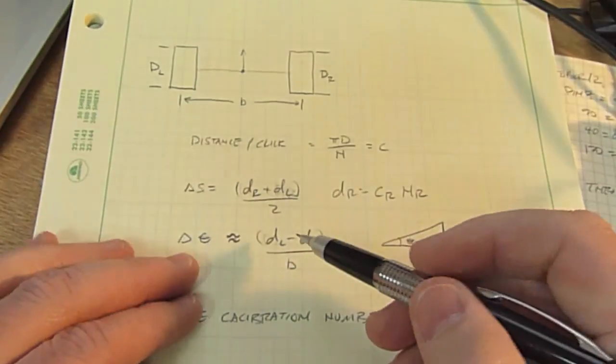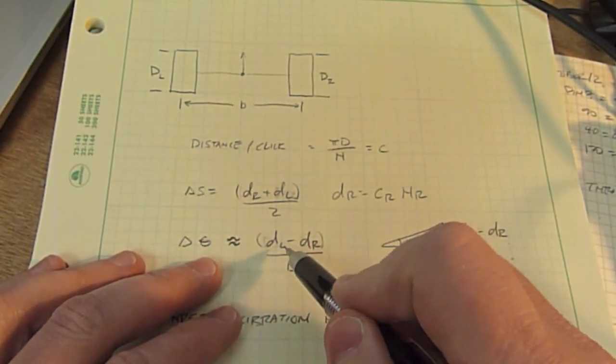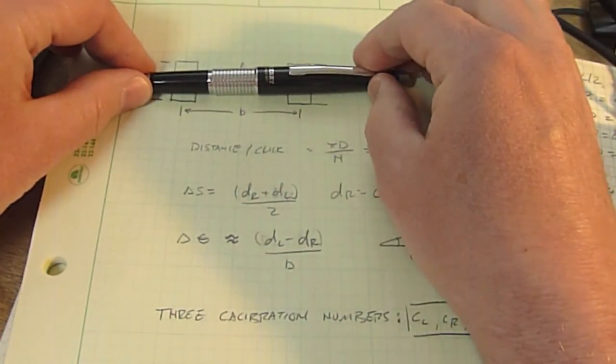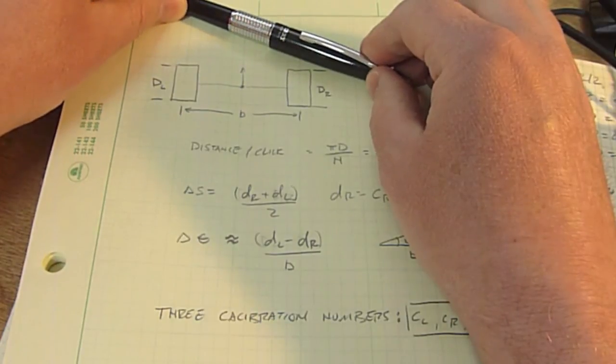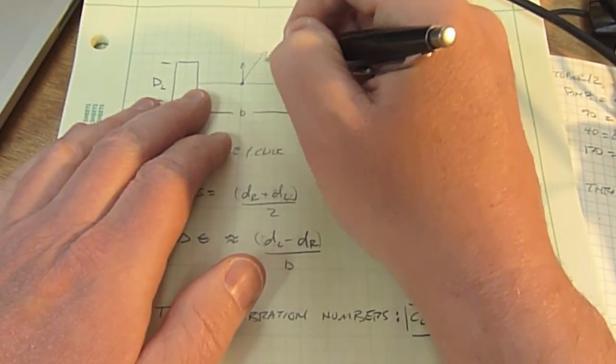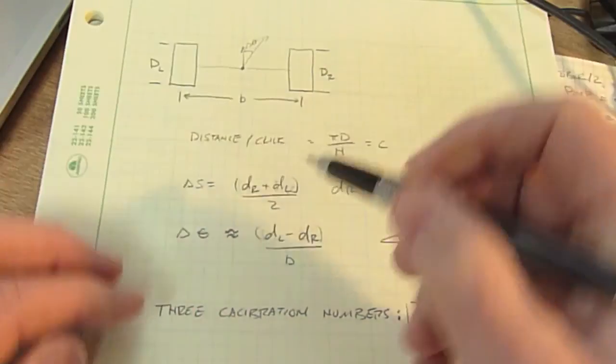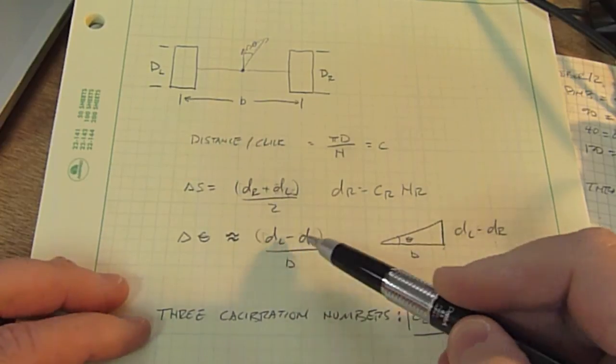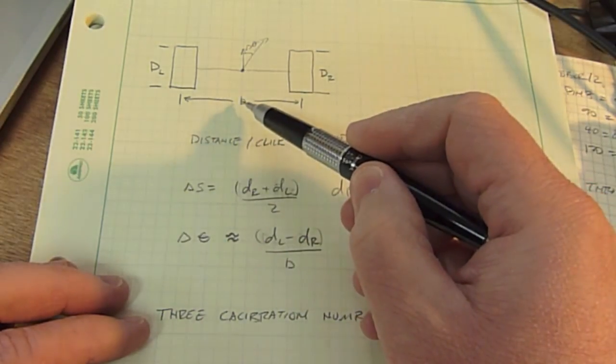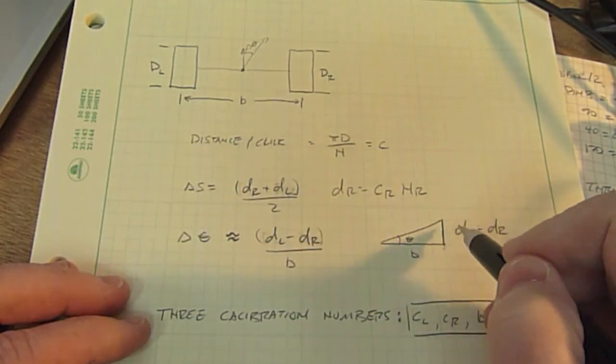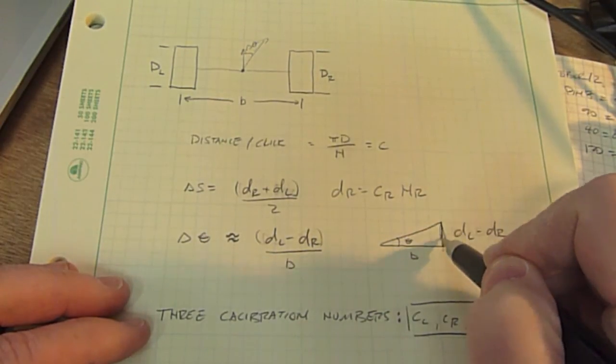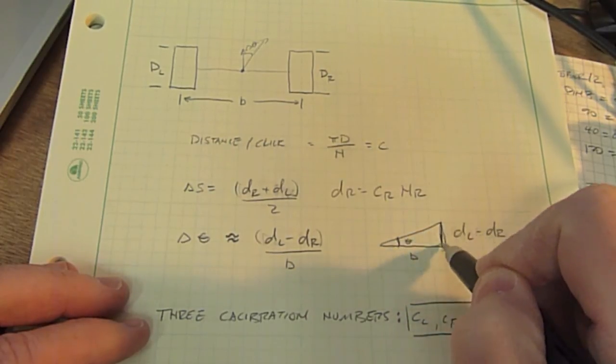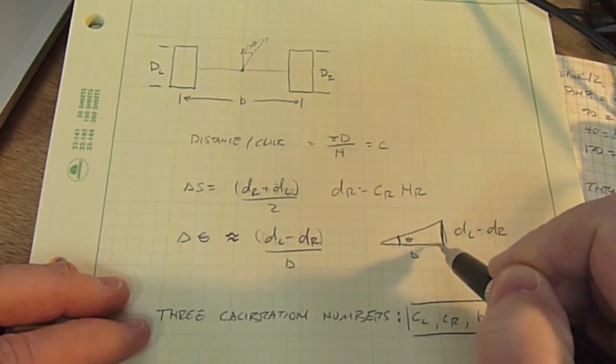To figure out the rotation of your robot, you take the difference between the left wheel and the right wheel. If the left wheel moves forward more than the right wheel, that means we've rotated in this direction, and this is delta theta. Delta theta is approximately in the small angle limit DL minus DR over B, where B is the baseline. You can see that because if the right moves a little bit more than the left, then the angle theta is just this distance over this distance in the small angle limit.